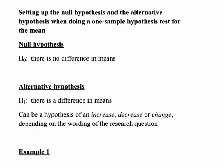Always in a hypothesis test, the null hypothesis is that there is no difference in means — in other words, the mean of the population the sample was drawn from is equal to some specific number. The alternative hypothesis is that there is a difference in means, meaning the population mean is either greater than, less than, or not equal to some specific number. Which of those is the case depends on the wording of the question being investigated.